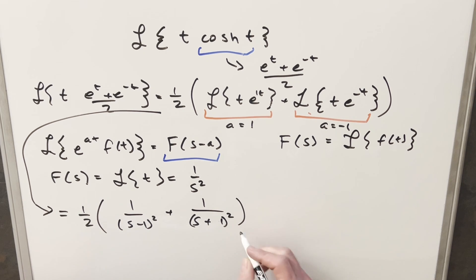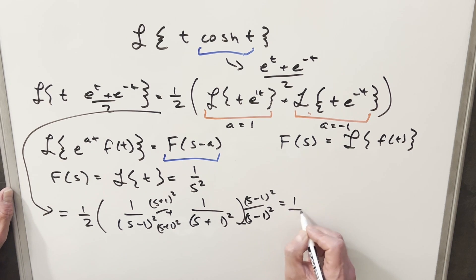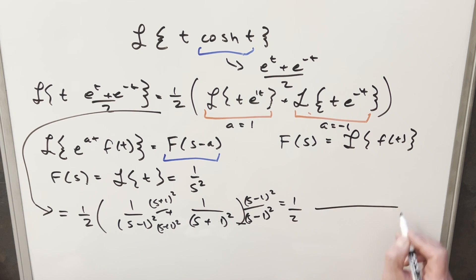Simplifying this, I just want to get a common denominator. Here I can multiply by s minus one squared over s minus one squared. And here I'll multiply by s plus one squared over s plus one squared. So doing that, we'll still have our half out front, but now we're going to have our common denominator of s minus one squared times s plus one squared.